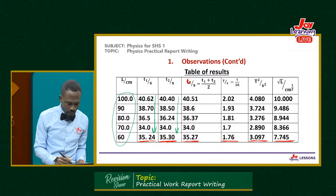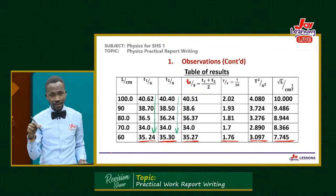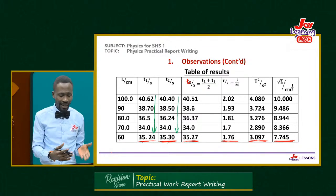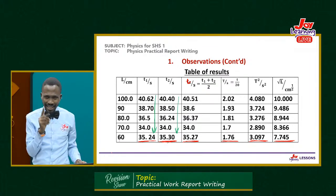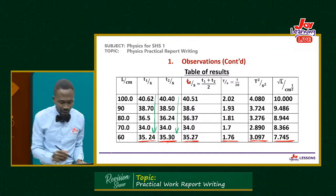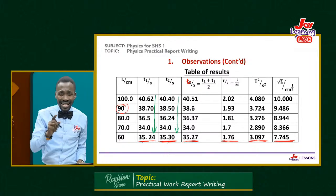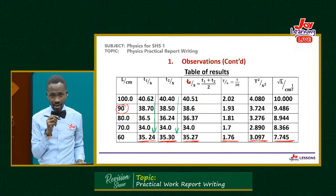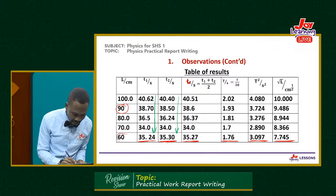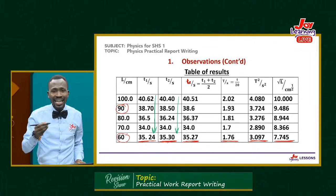Look at this table — the length values are metre rule readings. In the question you'll be given values like 100, 98, etc. — they are metre rule readings and must be written to one decimal place. The number of decimal places for values in a table depends on the instrument used. A metre rule can measure only up to one decimal place; therefore, you write metre rule readings to one decimal place. If a value has no decimal place shown, the examiner will deduct marks.